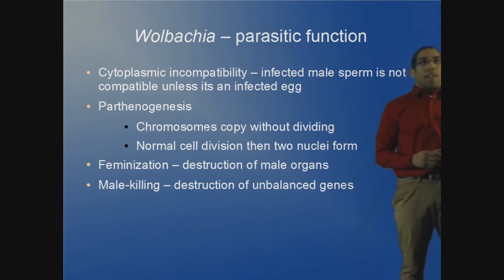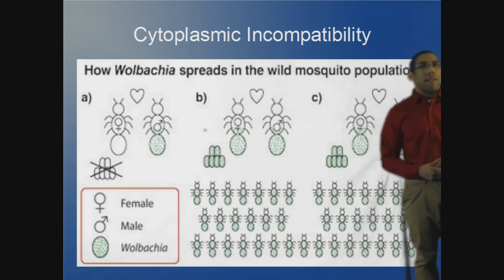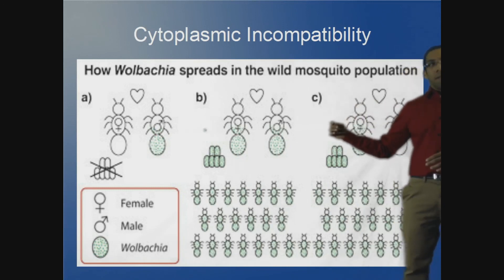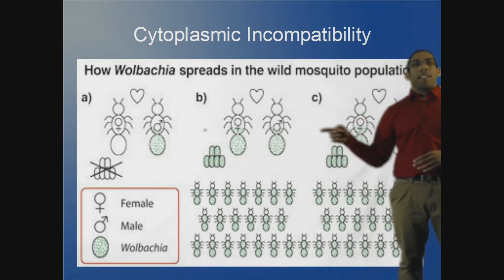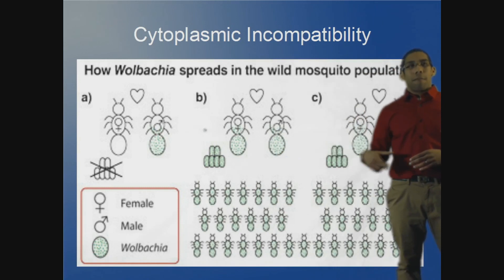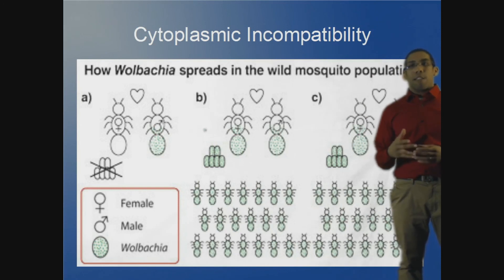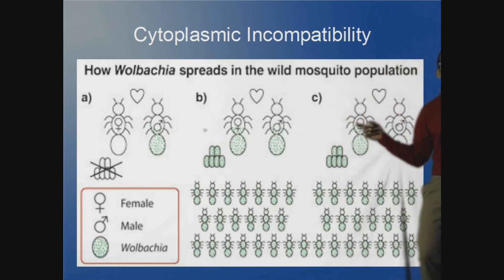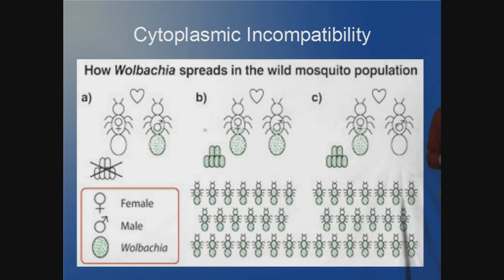This slide shows cytoplasmic incompatibility at work as Wolbachia spreads through a mosquito population. In example A, an infected male mated with an uninfected female produces no offspring — the genes lyse and die or the cells fail to divide. However, in examples B and C, if the female is infected, reproduction occurs successfully and offspring are produced — even if only the infected female is involved.